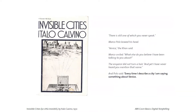The Khan says, 'It's Venice.' Marco Polo responds: 'What else do you believe I have been talking to you about? I have never heard you mention that name.' And Polo says, 'Every time I describe a city, I'm saying something about Venice.'